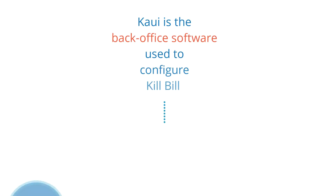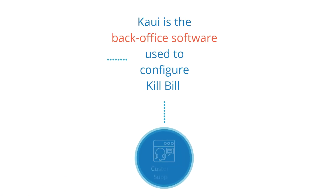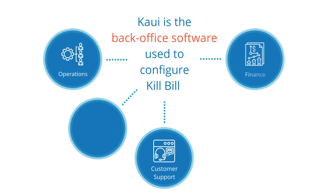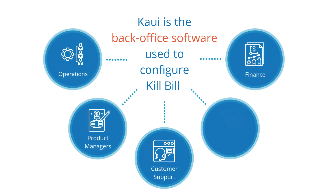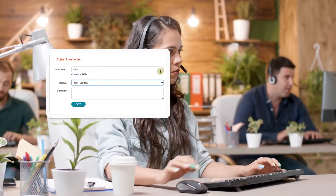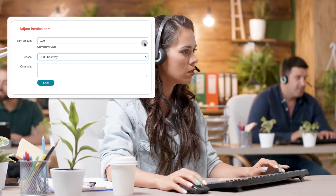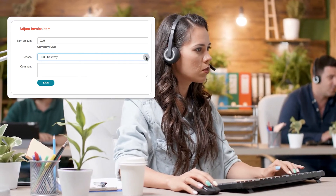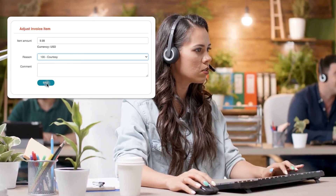It's the back office software used by customer support teams, operations, finance teams, product managers, and developers to configure and manage Kill Bill. For organizations that need a flexible or recurring billing system with payment processing features, Kaui helps your teams manage basic tasks like issuing refunds, adjusting invoices, and so much more.